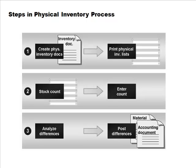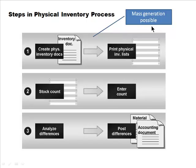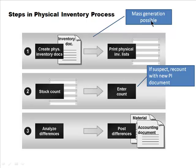Once differences are verified as real, you post them. For example, if you thought there were 500 but actually found 480, you post the difference of 20. After posting, stock on hand is reduced and inventory valuation and asset valuation are affected. In large companies dealing with thousands of items, you mass generate physical inventory documents and distribute them to various areas for counting. It's also possible to set up a recount process if a count looks suspect.